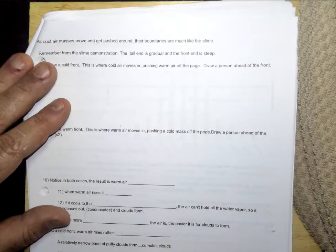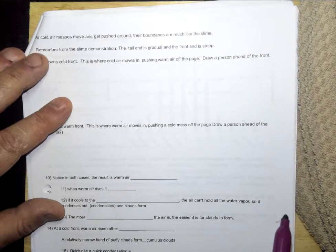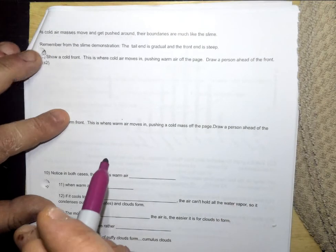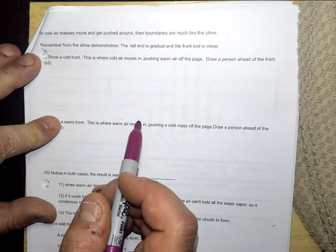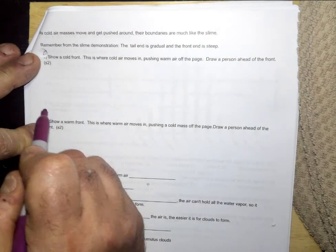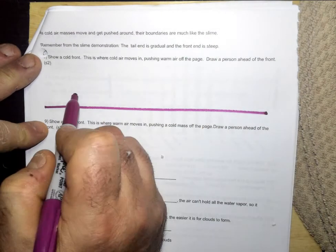Next page. As the cold air mass moves and gets pushed around, their boundaries are much like the slime. Remember from the slime demonstration, the tail end is gradual and the front end is steep. So let's draw a cold front. This is where cold air moves in, pushing the warm air off the page. So here's the ground.